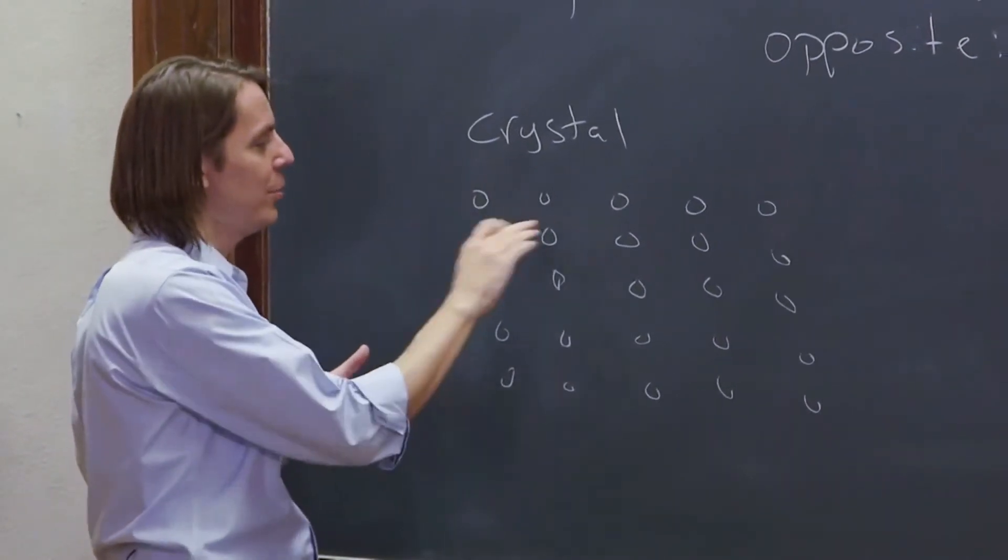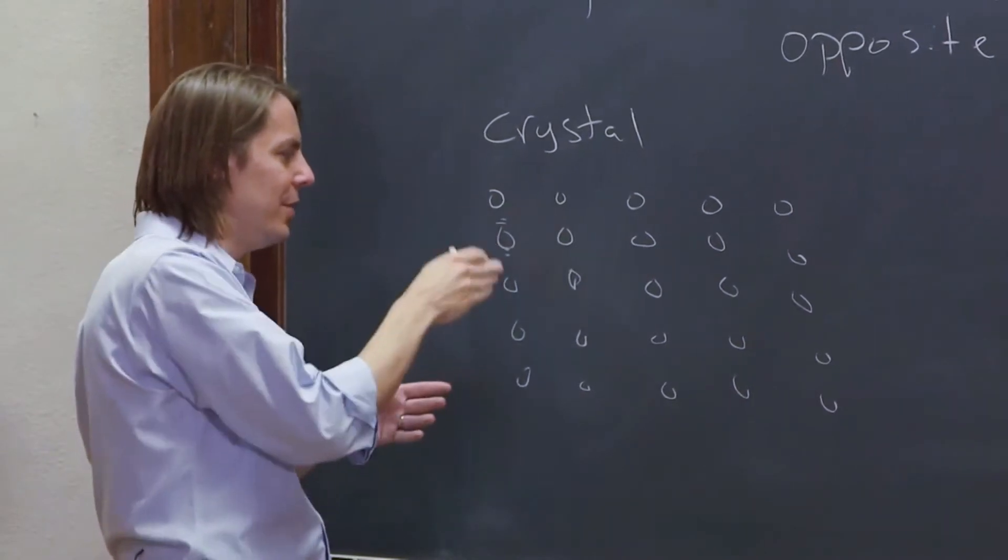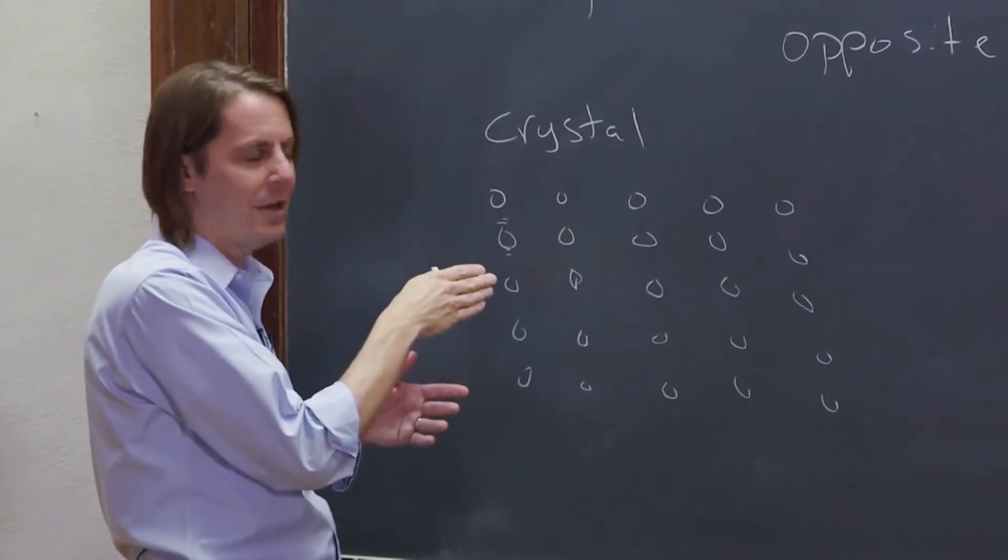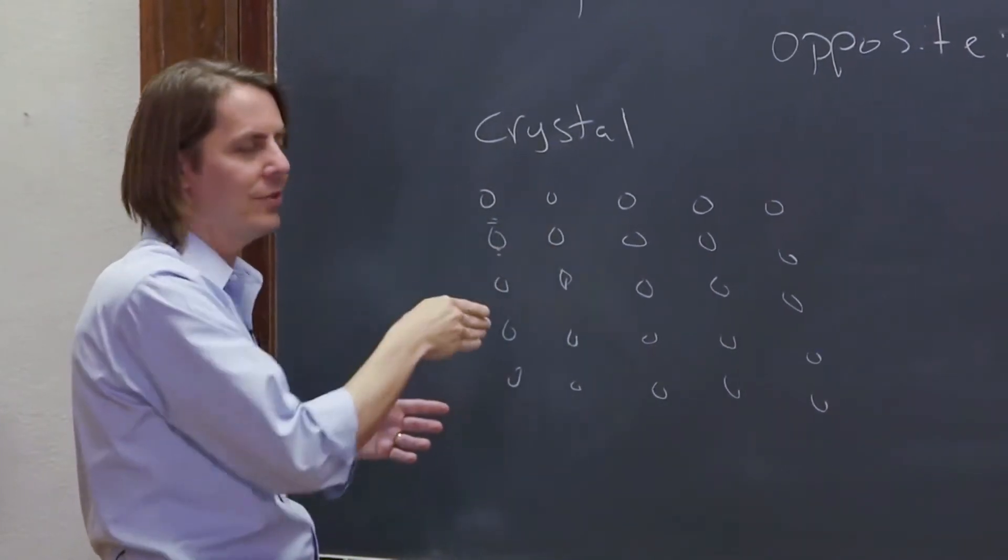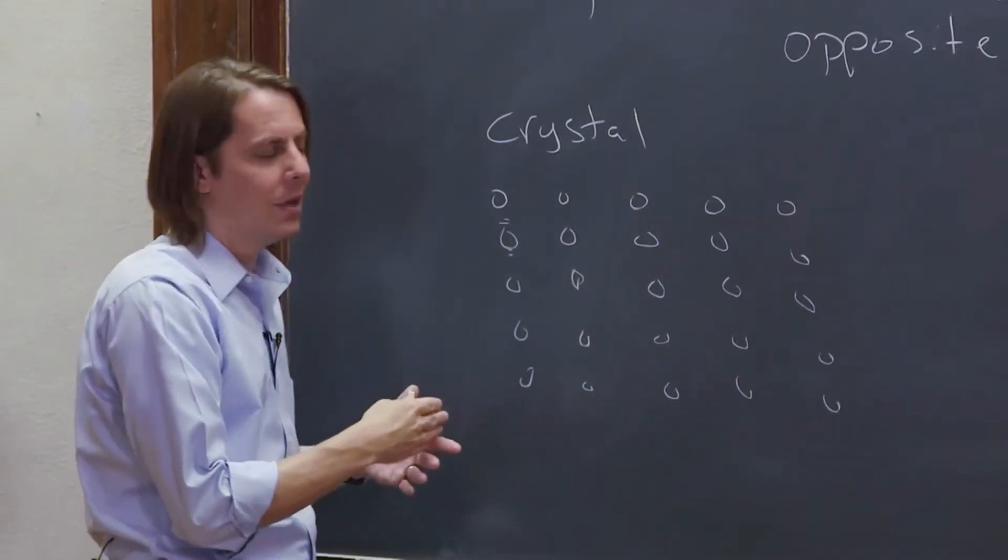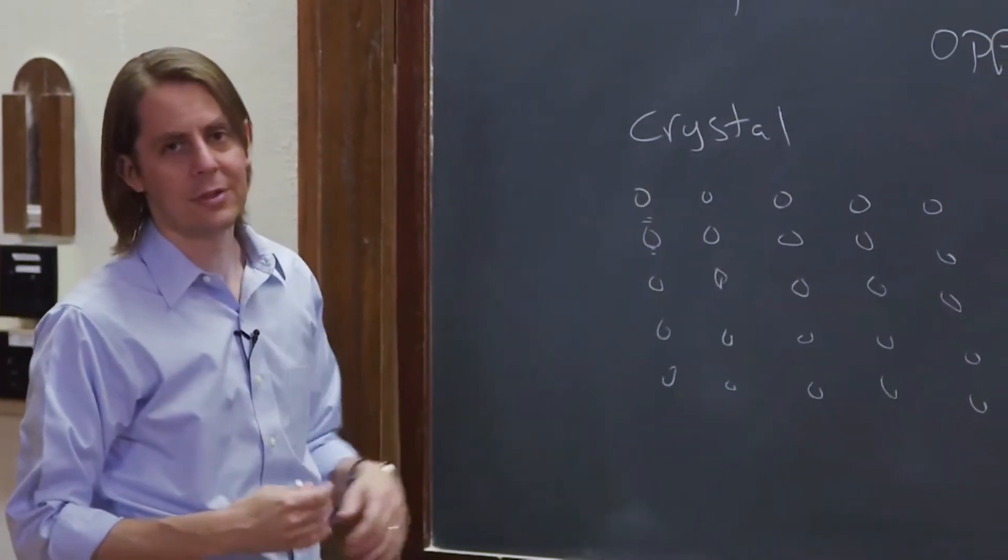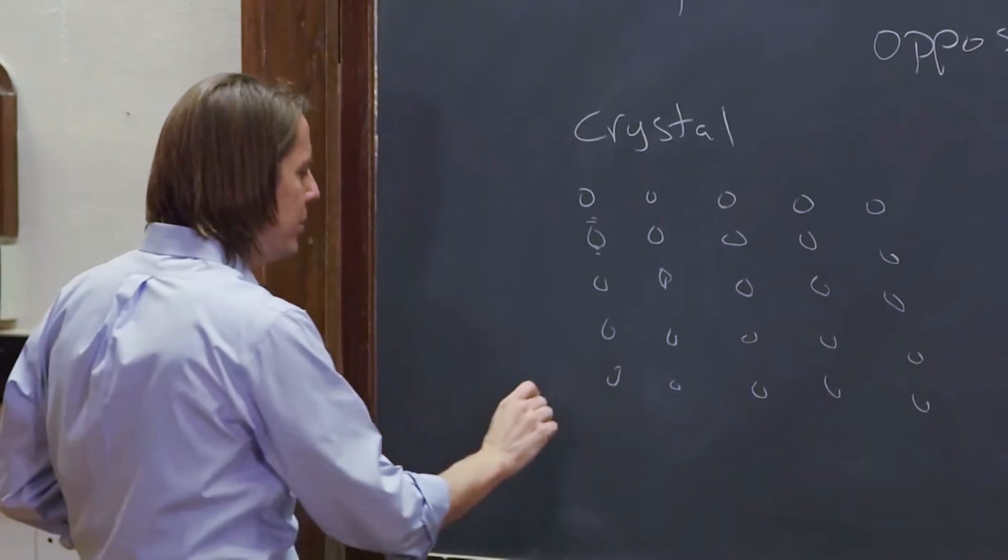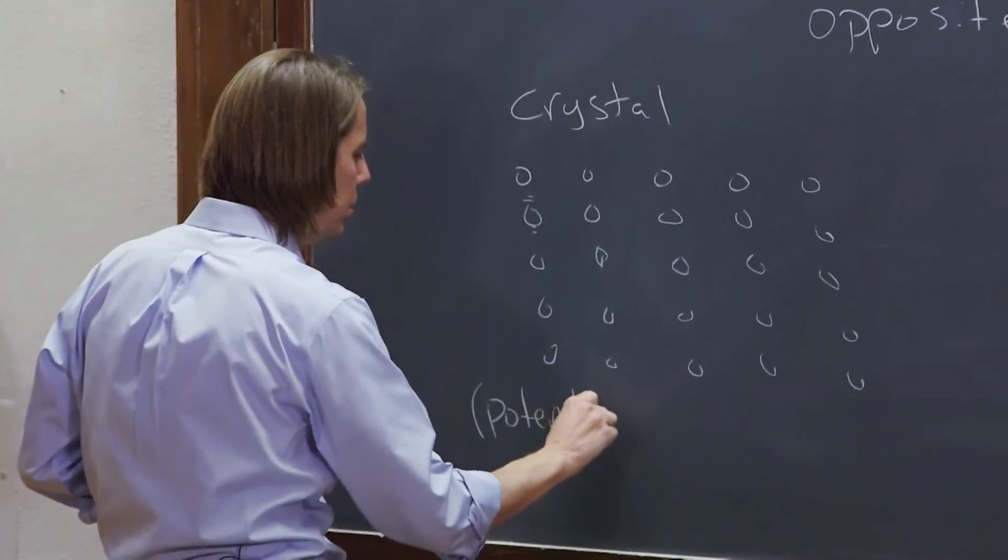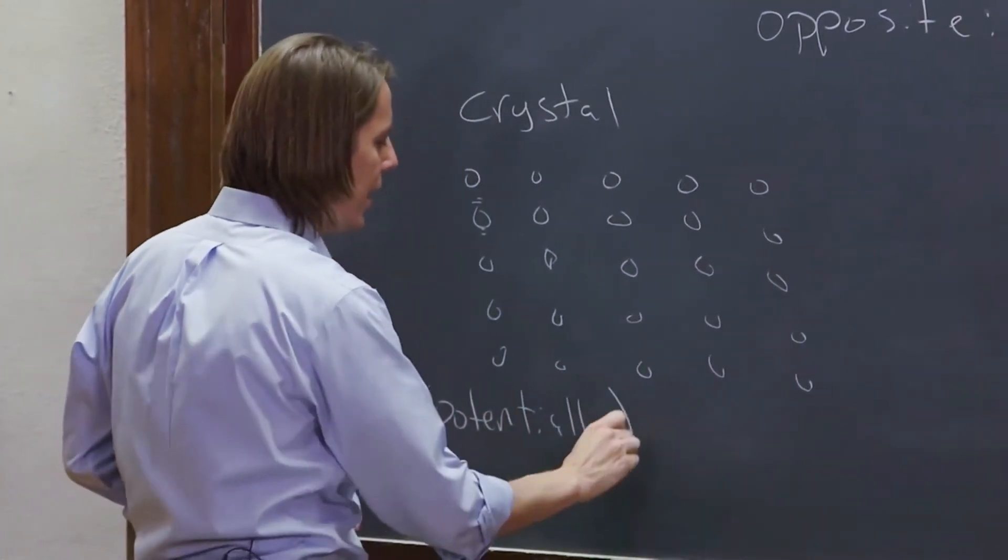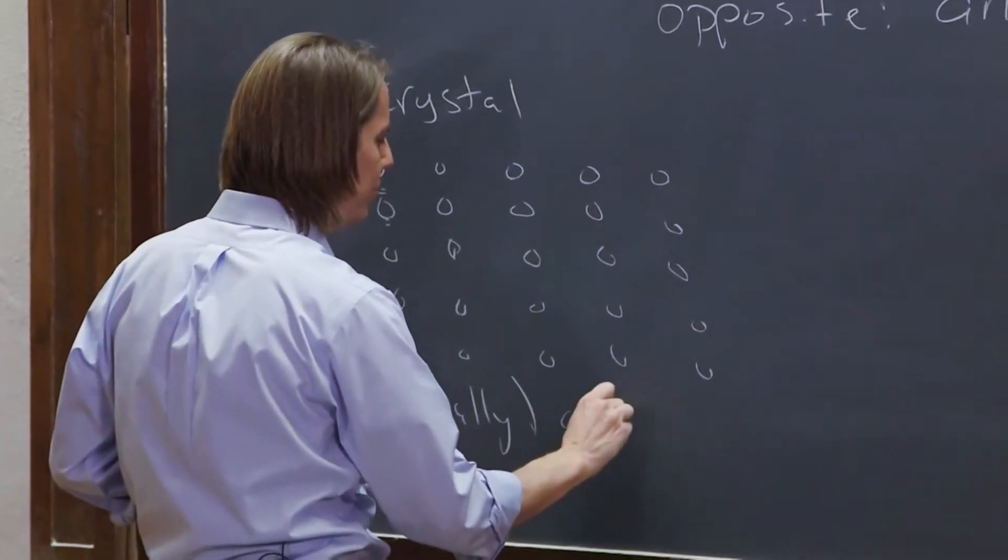Are they going to be bonded different this way than this way? So that effective spring constant of the electrons moving up and down as we hit it with light might be different along these two axes through the difference in the crystal structure in the spacing. So in crystals you can potentially have anisotropic optical properties.